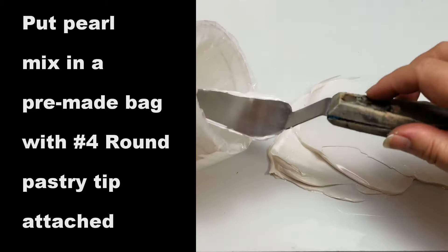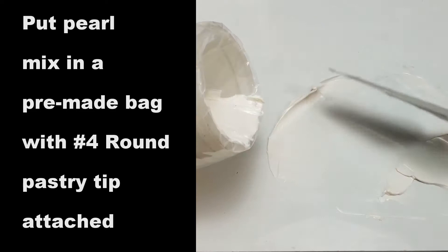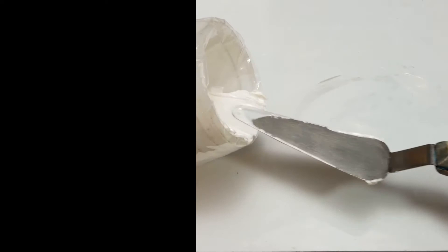Put pearl mix in a pre-made bag with a number 4 round pastry tip attached. Straighten out the bag.